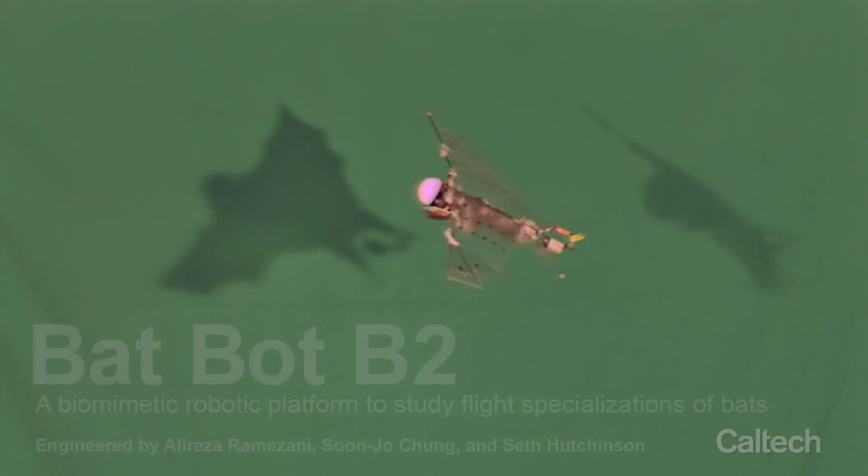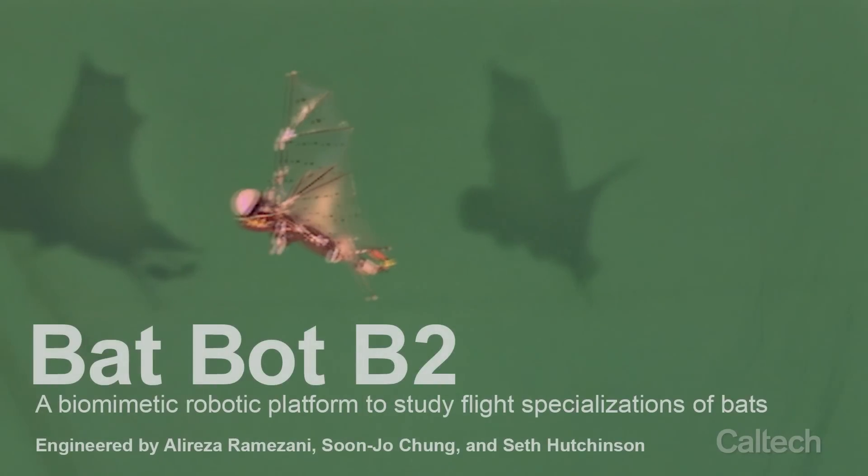We have created BatBot B2, a fully self-contained autonomous flying robot that weighs 93 grams, to mimic such morphological properties of bat wings.